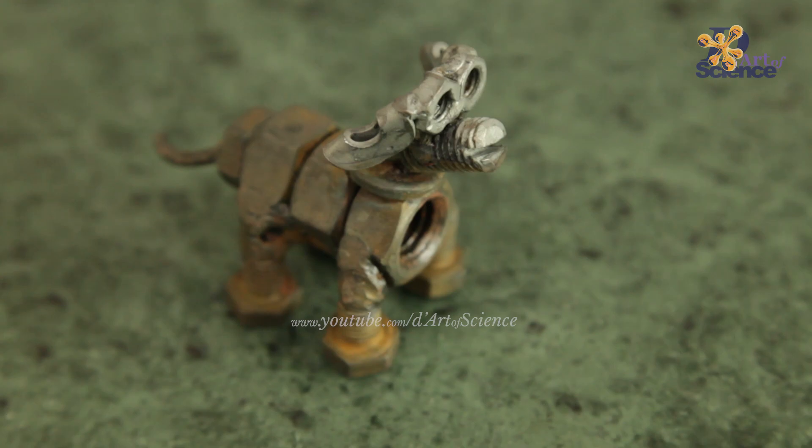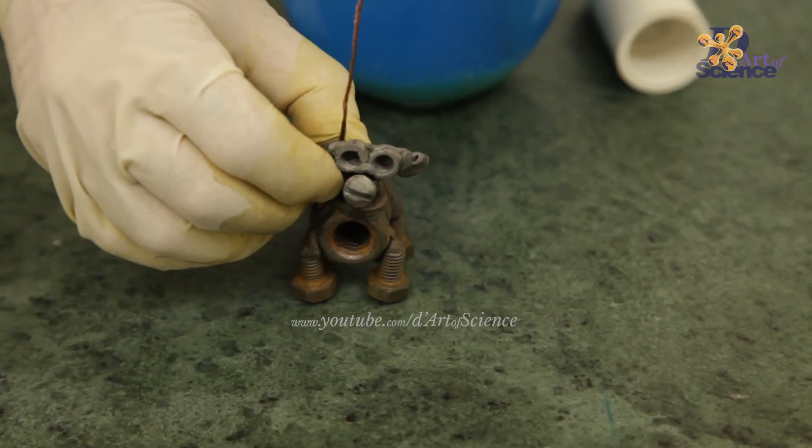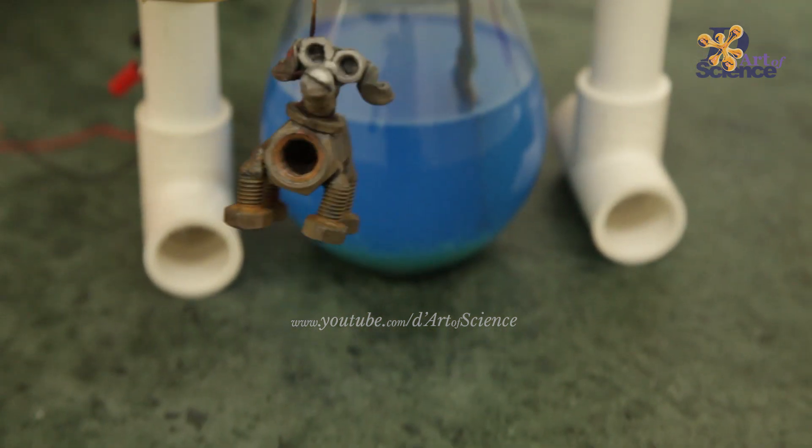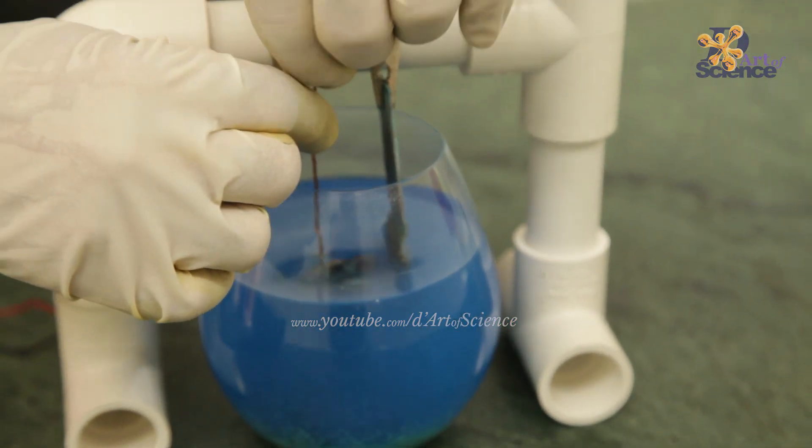This is the dog we will plate in copper. You can choose your object but let it be a metal one that is not already painted or plated. It should be raw. Make sure there is a wire connecting the object to the negative terminal so that it becomes the cathode.